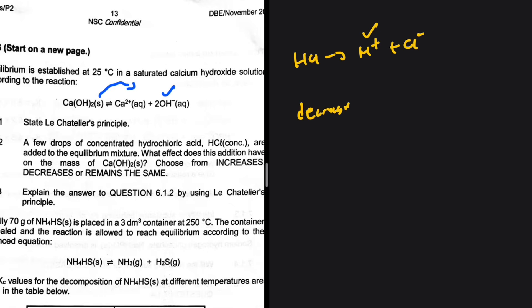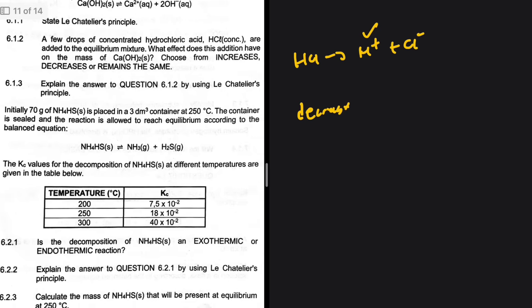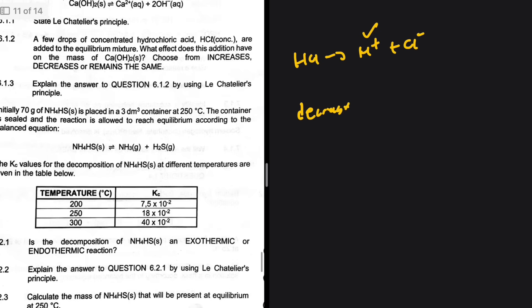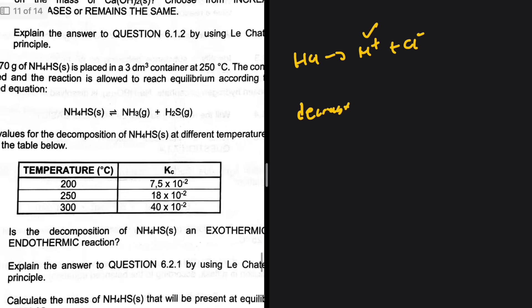6.2: Initially 70 grams of NH4HS is placed in a 3 decimeter cubed container at 250 degrees Celsius. The container is sealed and the reaction is allowed to reach equilibrium. The Kc values for the decomposition of NH4HS at different temperatures is given in the table below. 6.2.1: Is the decomposition of NH4HS an exothermic or endothermic reaction?